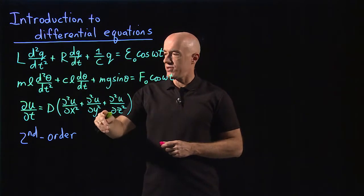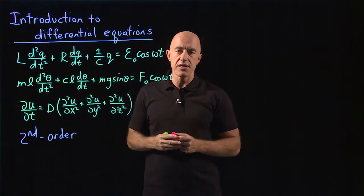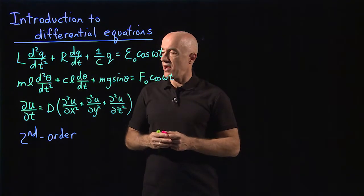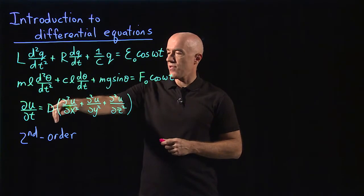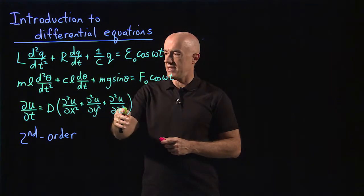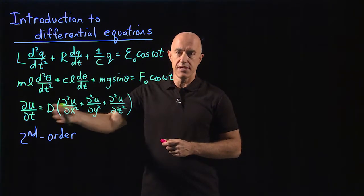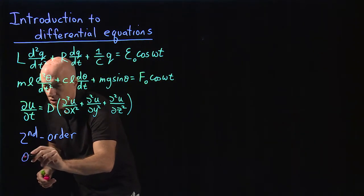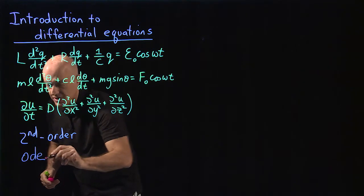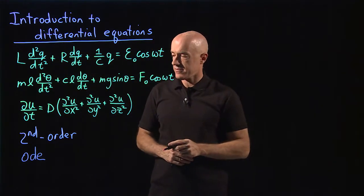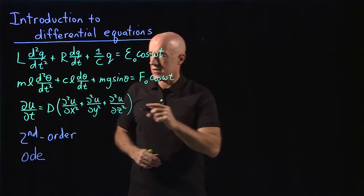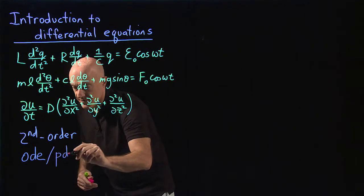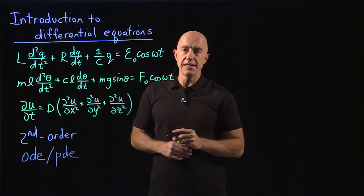But in the third equation, u — which is the concentration of the pollution in the air — is a function both of position x, y, and z, and also t. So the first two equations are what we call ordinary differential equations, or ODEs. And the third differential equation is what we call a partial differential equation, or PDE.